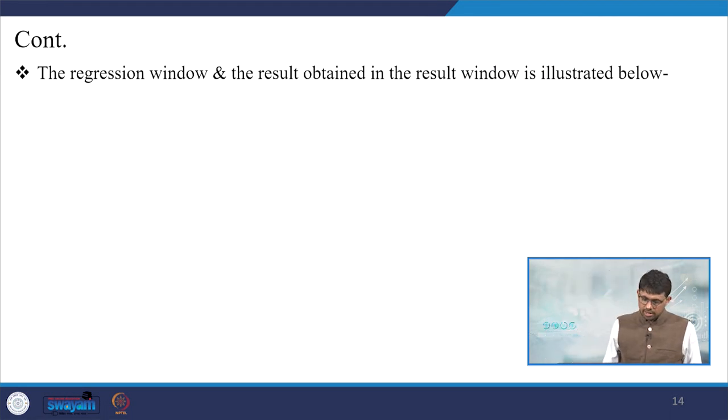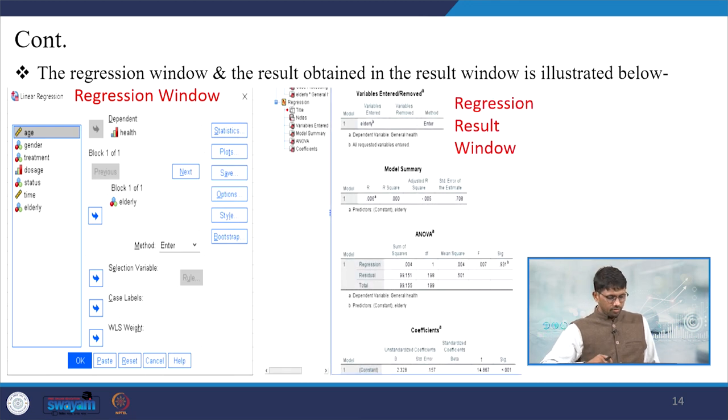Within descriptive statistics you'll see frequencies, descriptives, explore, cross-tabulation. For regression analysis, you define the dependent variable and the set of independent variables in the regression window. Here we have defined health as the dependent variable, and elderly as one of the predictors. If you click on Statistics or Plot for graphs, you will get many other directions for analysis.